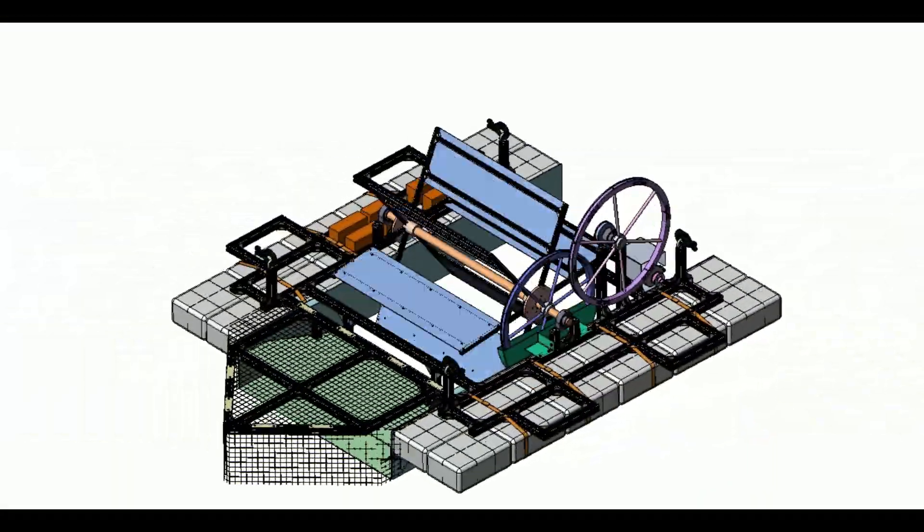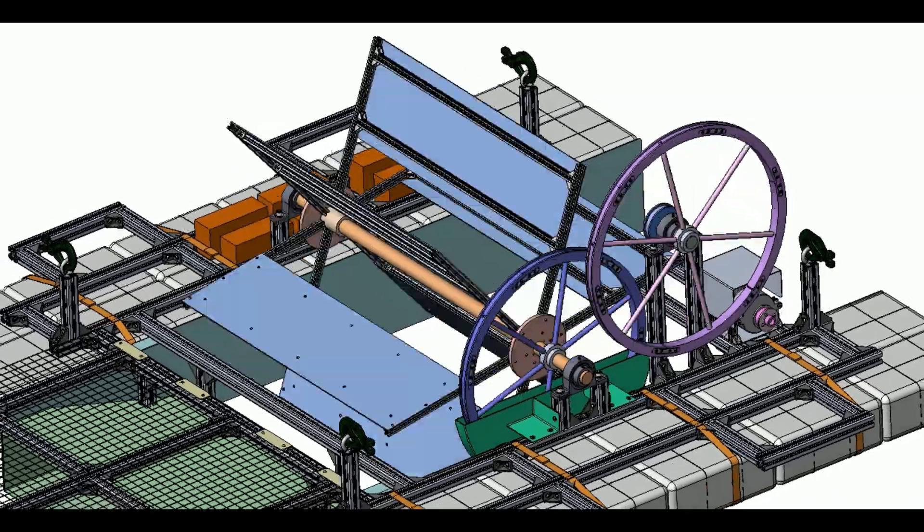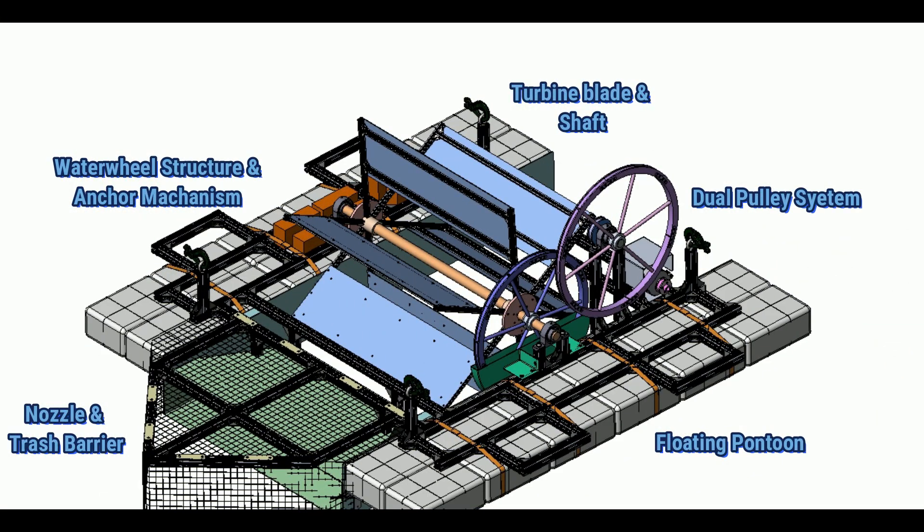The waterwheel design consists of several components, such as turbine blade, shaft, pulleys, floating pontoon, structure, anchor, nozzle and trash barrier.